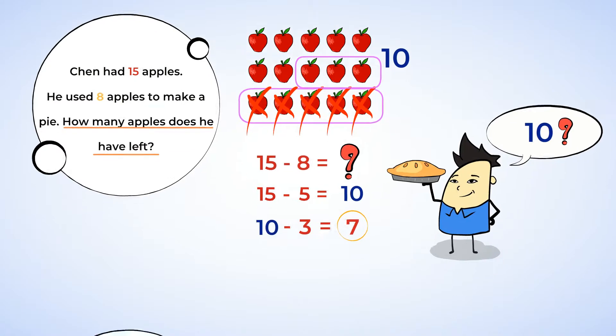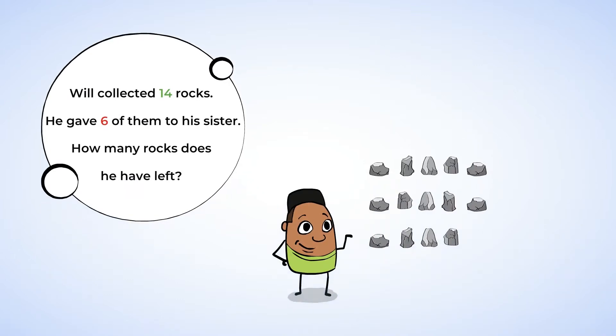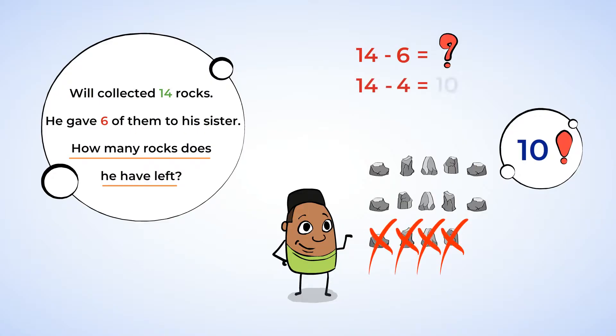Will collected 14 rocks. He gave 6 of them to his sister. How many rocks does he have left? The subtraction sentence is 14 minus 6 equals what number? First, try to find 10. This is a subtraction sentence that begins with the number 14. So think back to the way that 10 likes to hide. 14 minus 4 equals 10. You found 10 again.